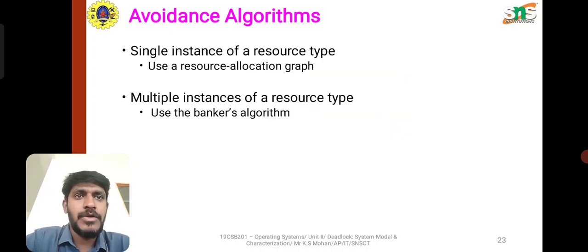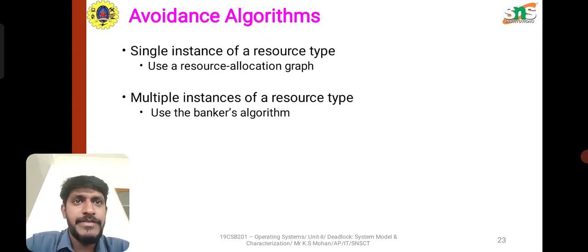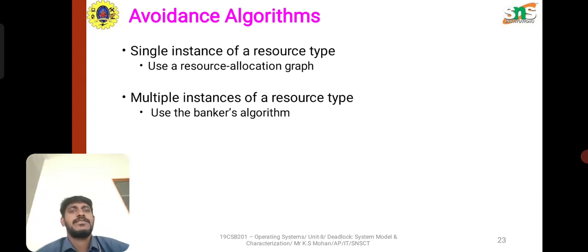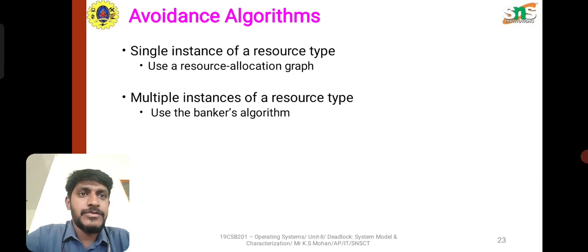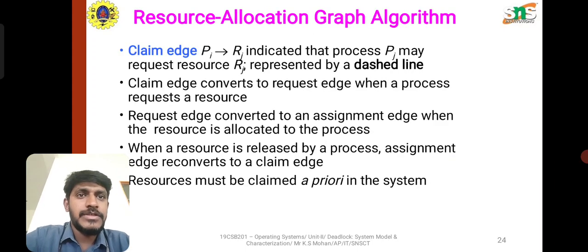Avoidance of deadlock can use different kinds of algorithms. The avoidance algorithm for a single instance of resource type uses the Resource Allocation Graph. For multiple instances of resource type, we use the Banker's Algorithm.